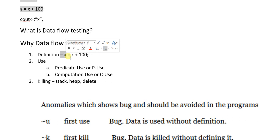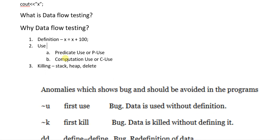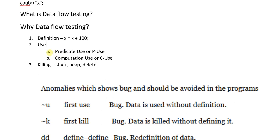You can conceive a variable like a container that holds some content, and whenever we replace that content with new content it is called a definition. The term 'use' in data flow testing has two types: the first is predicate use, or P-use, and the second is computation use, or C-use.